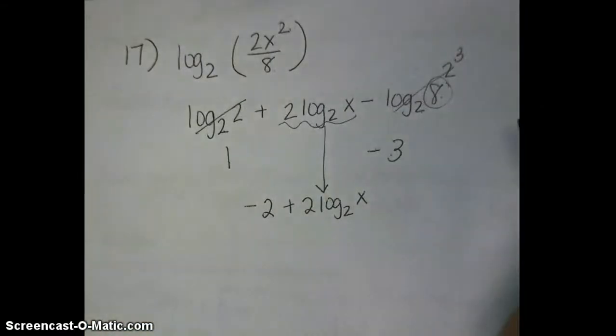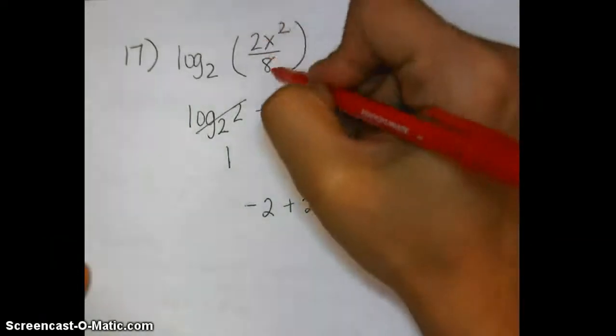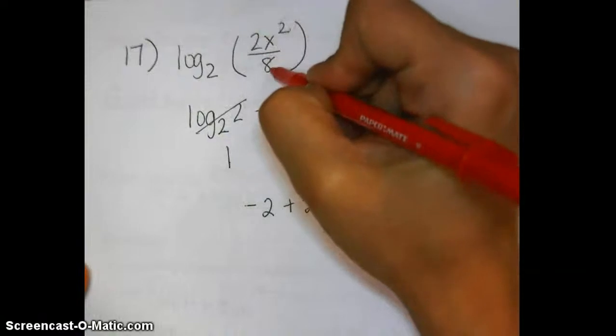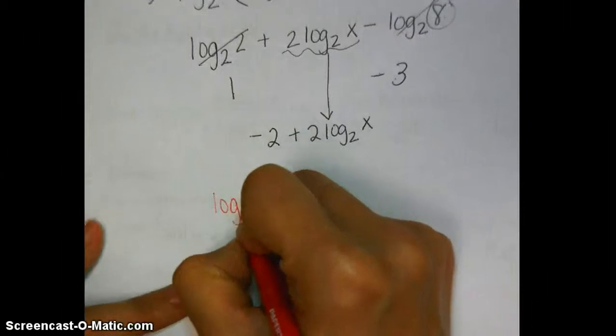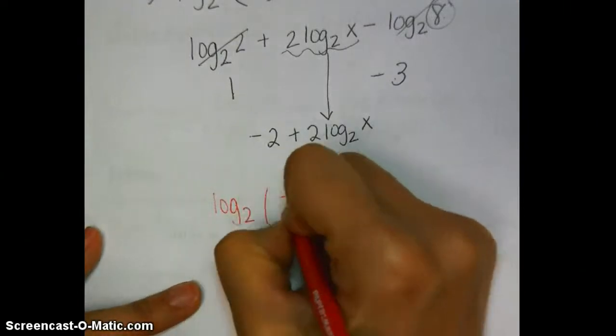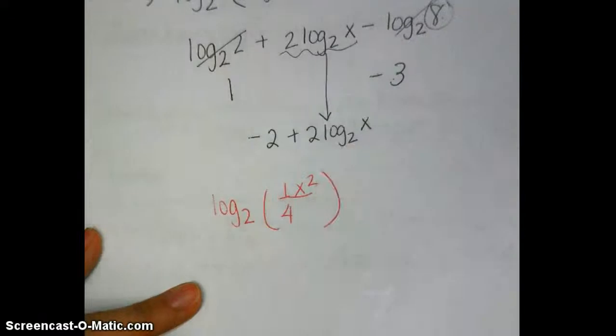So there's one way to look at the problem. Another way to look at the problem is to notice that in the very beginning I could have reduced this fraction here to 1/4. So if you notice that, then the problem would have been log base 2 of 1/4 x squared like this.